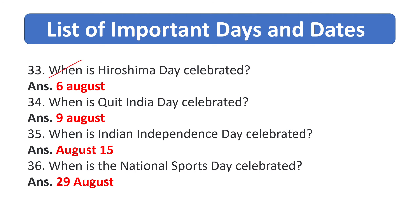When is Hiroshima Day celebrated? 6th August. When is Quit India Day celebrated? 9th August. When is Indian Independence Day celebrated? August 15th.